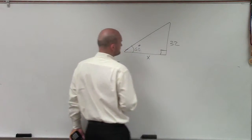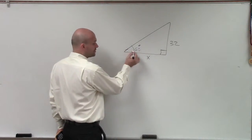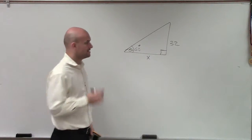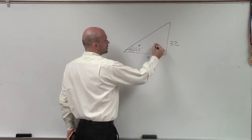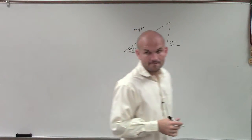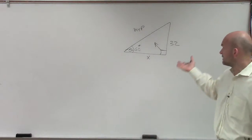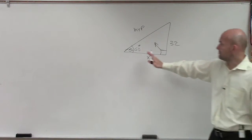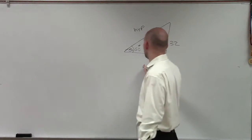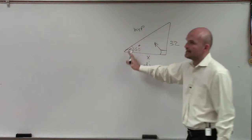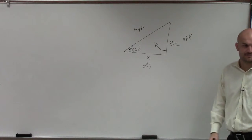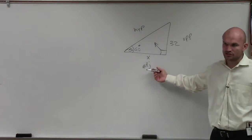Remember, ladies and gentlemen, when we have an angle — this is our angle that we call theta — and we say theta is equal to 60 degrees, we have a right angle. Across from our right angle is our hypotenuse. The angle between theta and our 90-degree angle is what we call the adjacent side, and opposite our angle is what we call the opposite side. So in this case, we have our opposite and our adjacent.